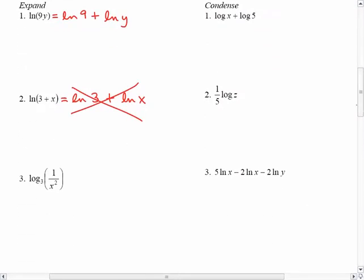You can distribute it when you have multiplication, like number 1, or division, like number 3. So for number 3, we could get the log base 3 of 1 and the log base 3 of x squared, and then just subtract them in this case, because we're dividing inside of the log. And then this 2 can go to the front according to the power rule.